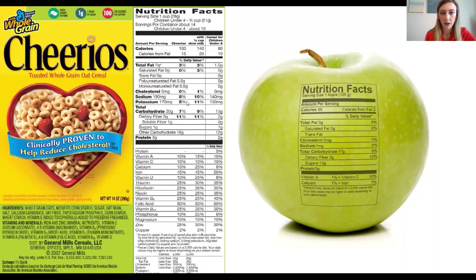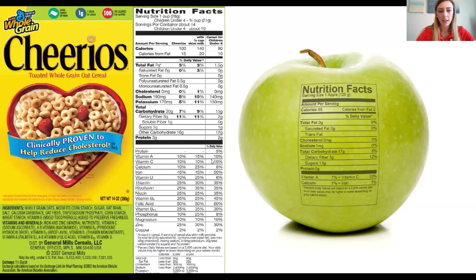Sodium is about 8%; with milk added, it's about 10%. Then your potassium, total carbs, dietary fiber, sugars — very limited added sugars, which is a good thing. And then protein — there's still some protein in Cheerios. Below that, you can see there are a lot of vitamins found in this meal. One other thing to look at: the first ingredient is whole grain oats.